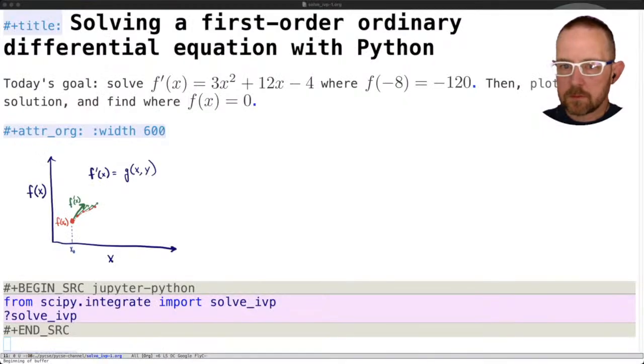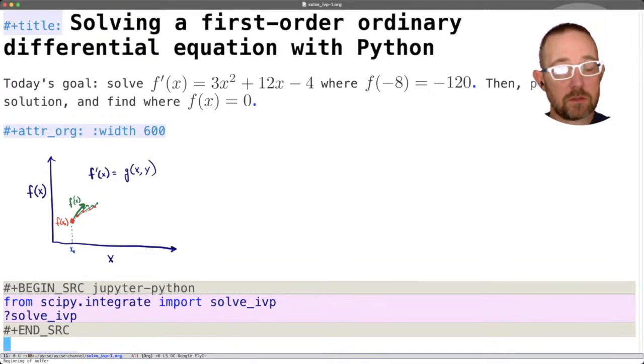All right, so today I want to talk about how we're going to use Python to solve a first order differential equation. Our goal in this video is to find a solution to this differential equation defined up here: f prime of x equals 3x squared plus 12x minus 4, with the initial condition f of minus 8 equals minus 120. Then plot the solution and find where f of x is equal to 0.